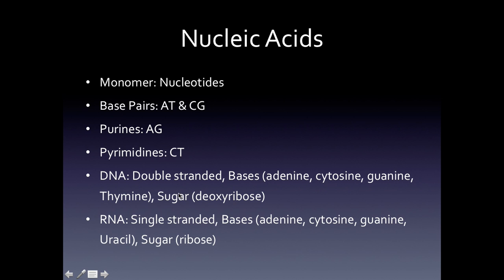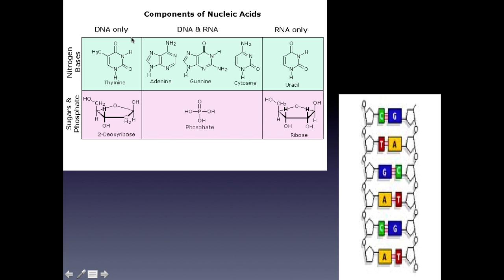To compare and contrast DNA and RNA: DNA is double-stranded, with bases adenine, cytosine, guanine, and thymine, and uses deoxyribose sugar. RNA is single-stranded, with bases adenine, cytosine, guanine, and uracil, and uses ribose sugar. Key things to remember are the AG pure mnemonic, the different base pairings in DNA versus RNA, and that the monomers are nucleotides. The image here compares and contrasts DNA and RNA visually as described.